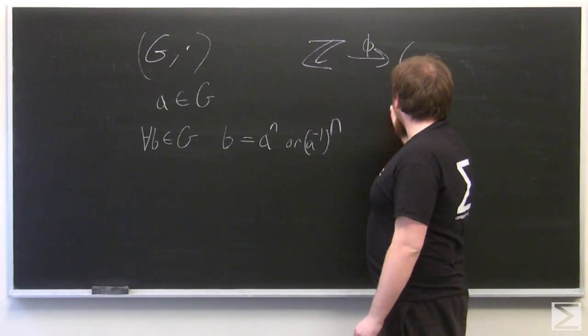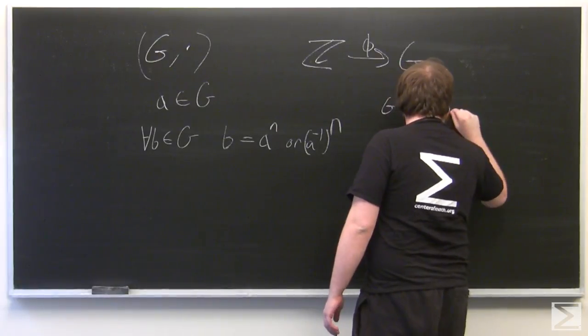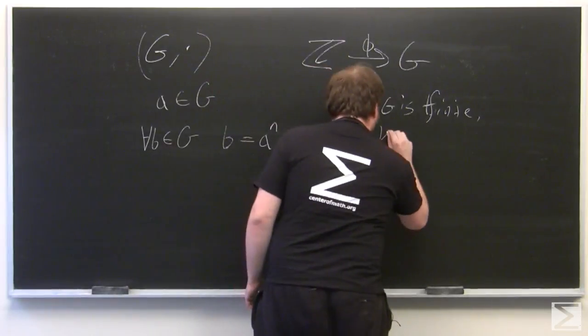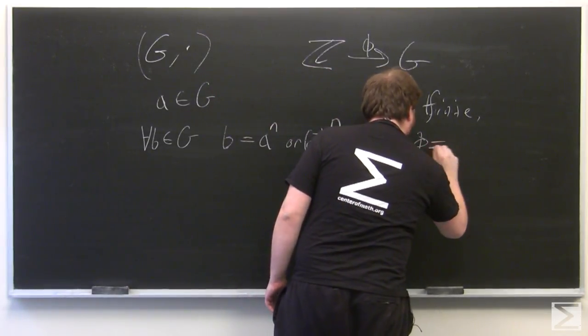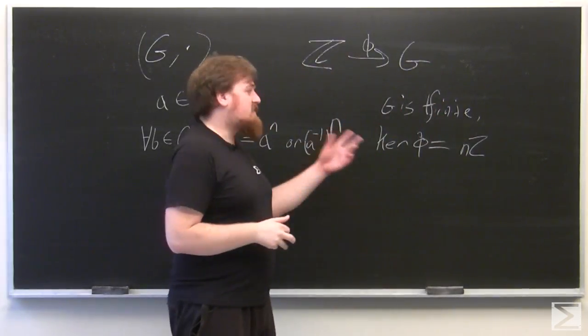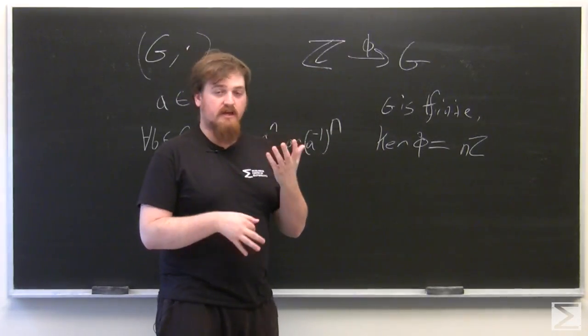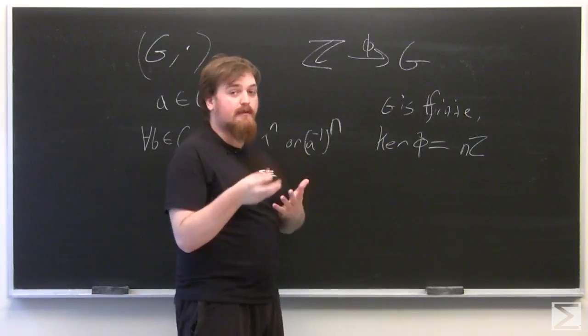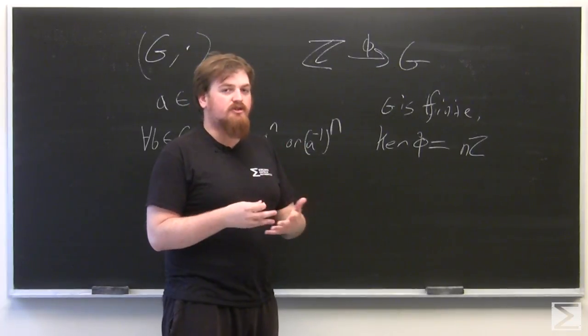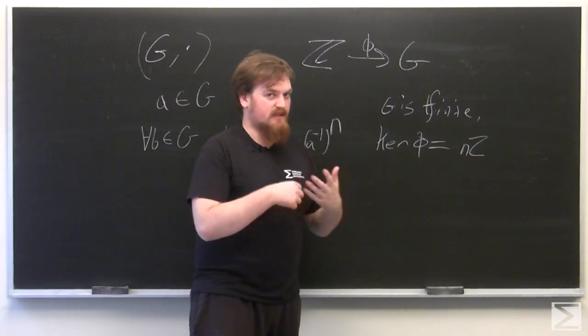If G is finite, then the kernel of phi has to be some subgroup of Z. Since Z is abelian, all of its subgroups are normal and are thus eligible to be kernels of homomorphisms. But the only subgroups of Z are the sets of integers which are all multiples of some integer. So this is written nZ, where n is the integer that everything in there is a multiple of.